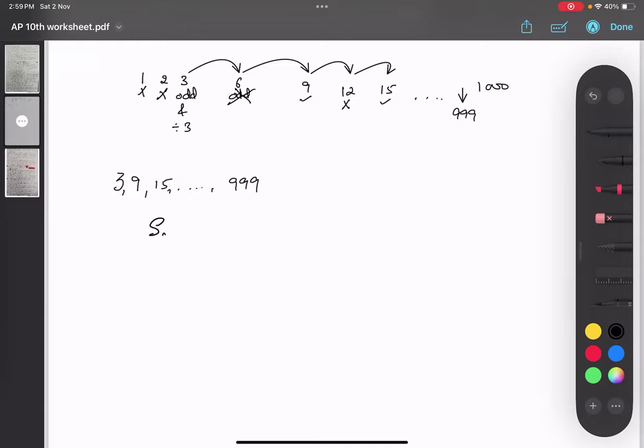So we have to find the sum of all the terms. We have the last term also, so we will be using n by 2, a plus an.